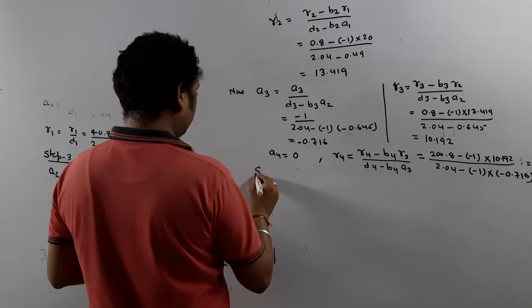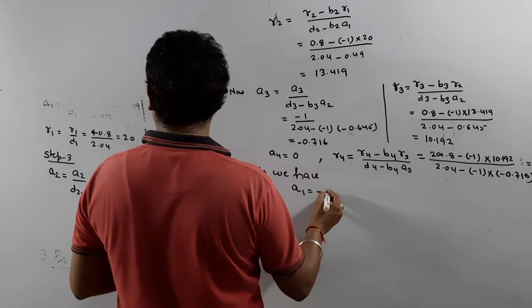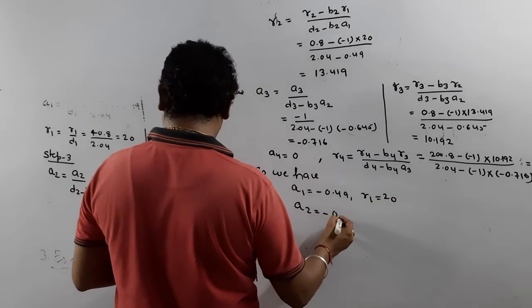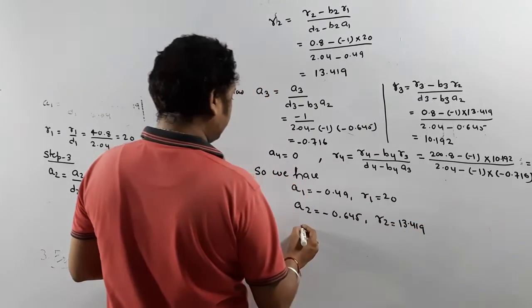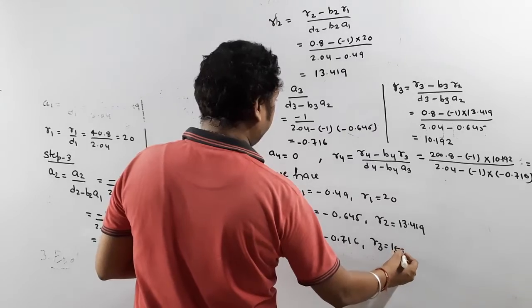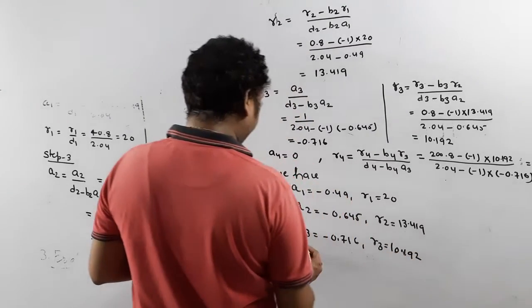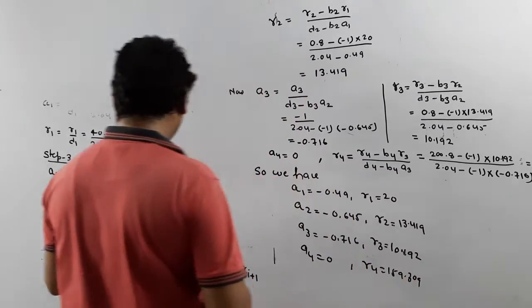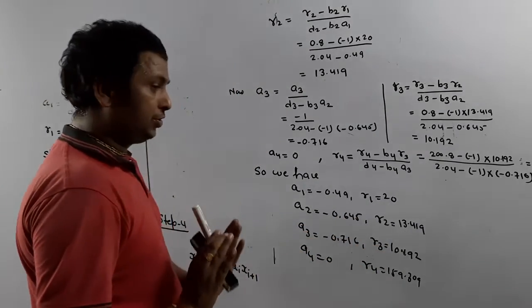Now we have all values. Let me list them: A1 = −0.49, R1 = 20, A2 = −0.645, R2 = 13.419, A3 = −0.716, R3 = 10.192, A4 = 0, R4 = 159.309 (please check). So we have A1, A2, A3, A4 and R1, R2, R3, R4 — all values calculated. Now we move to the last step.